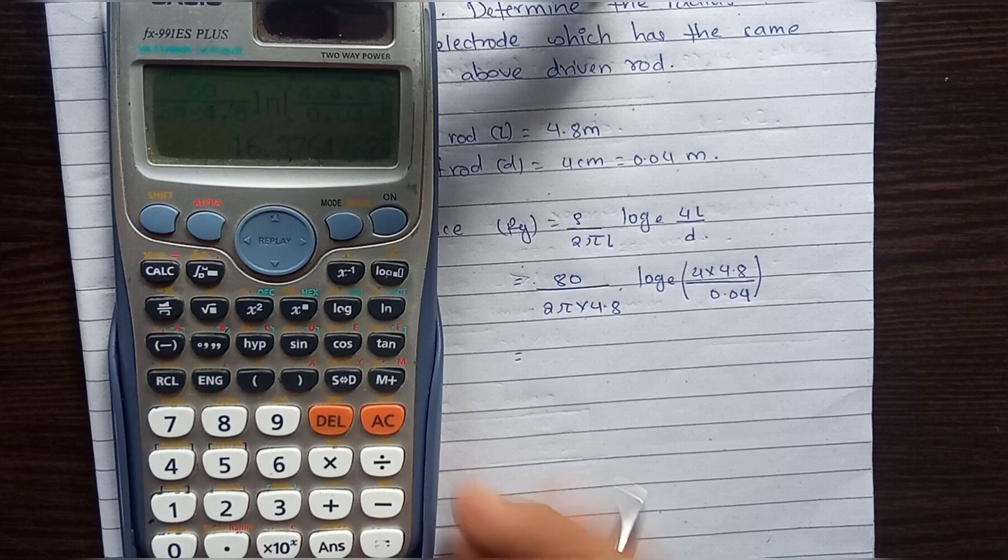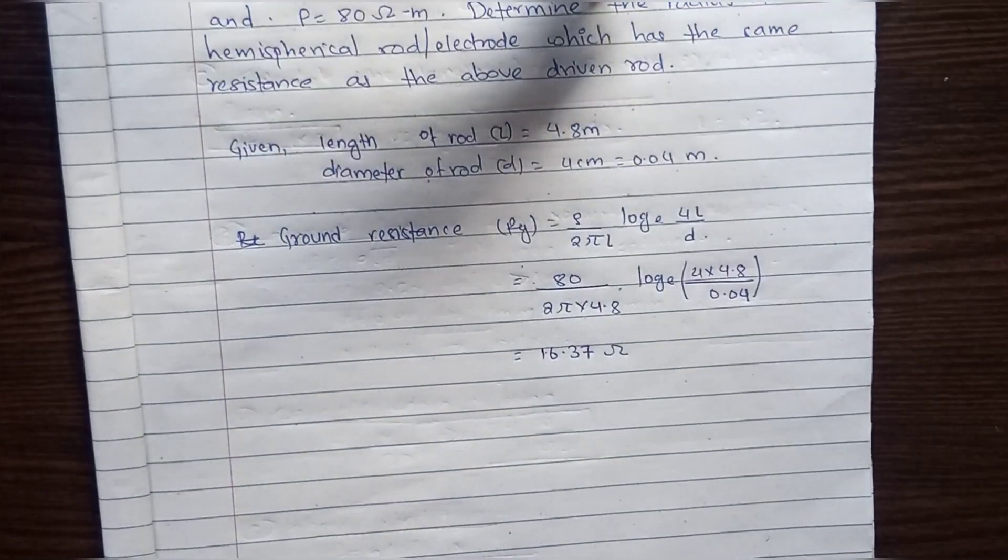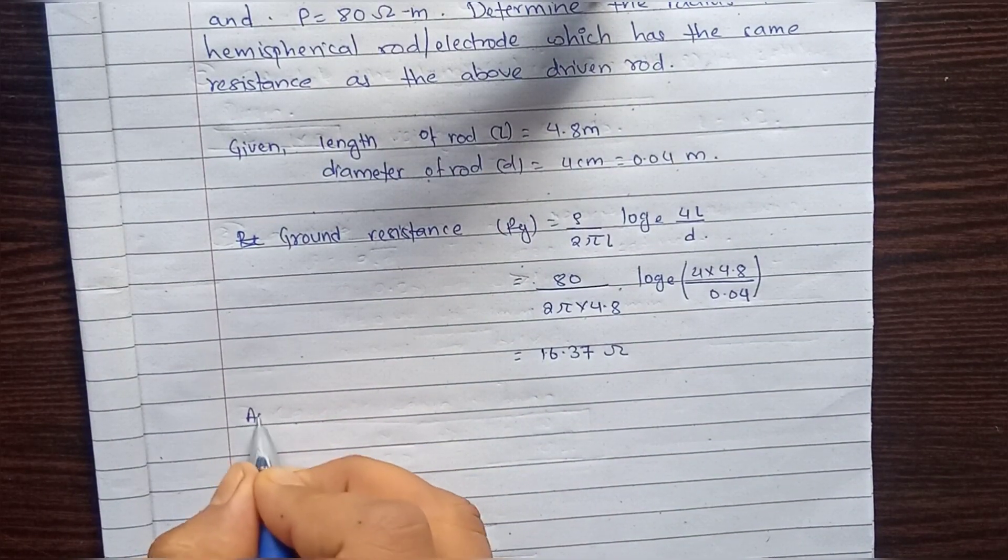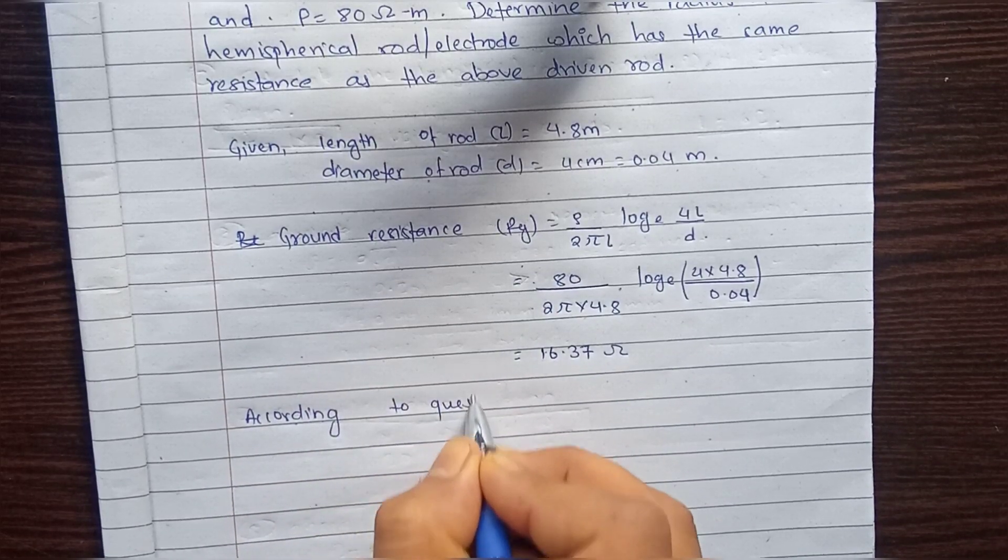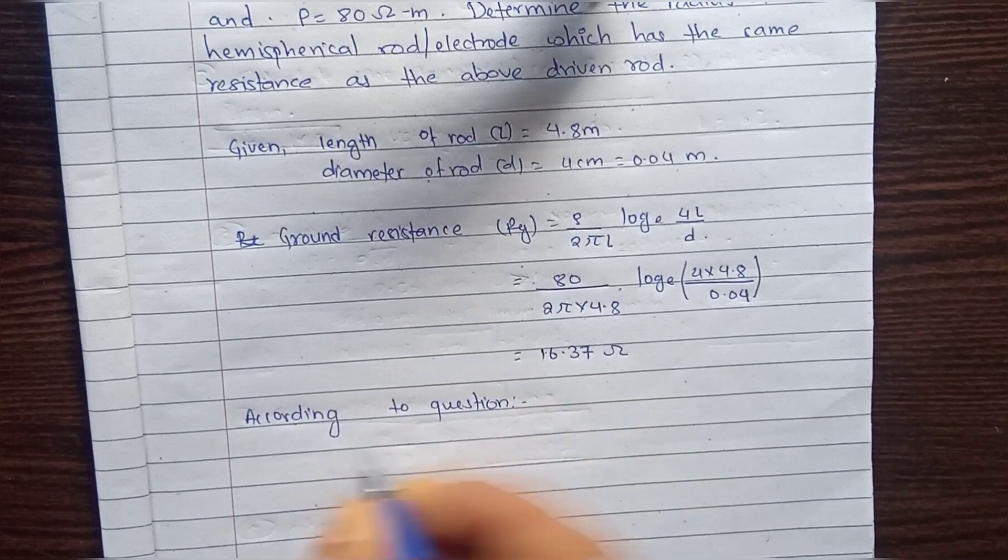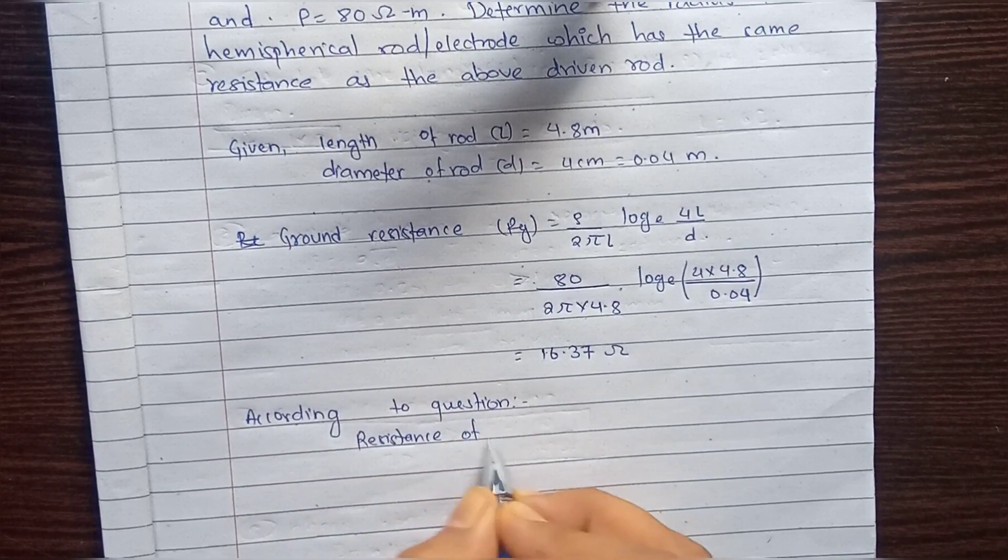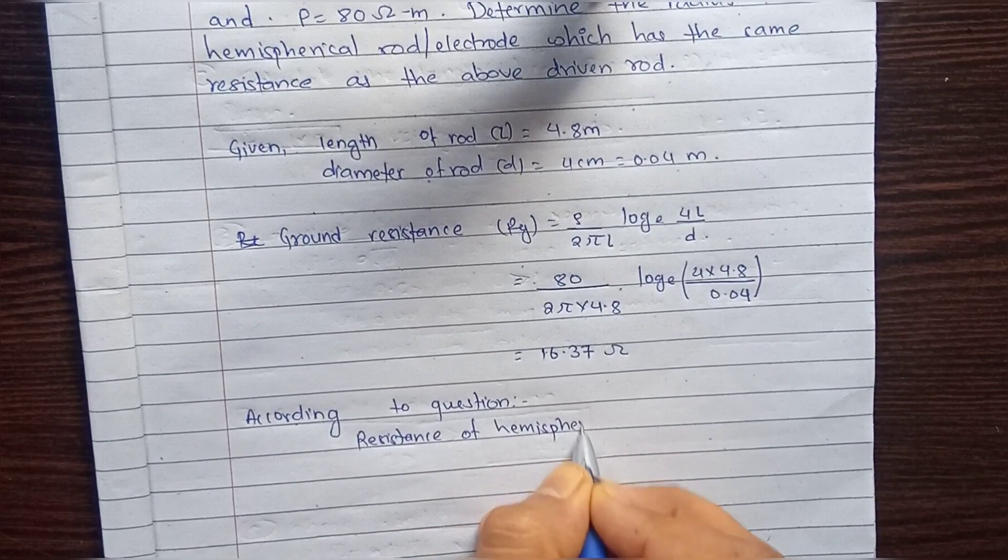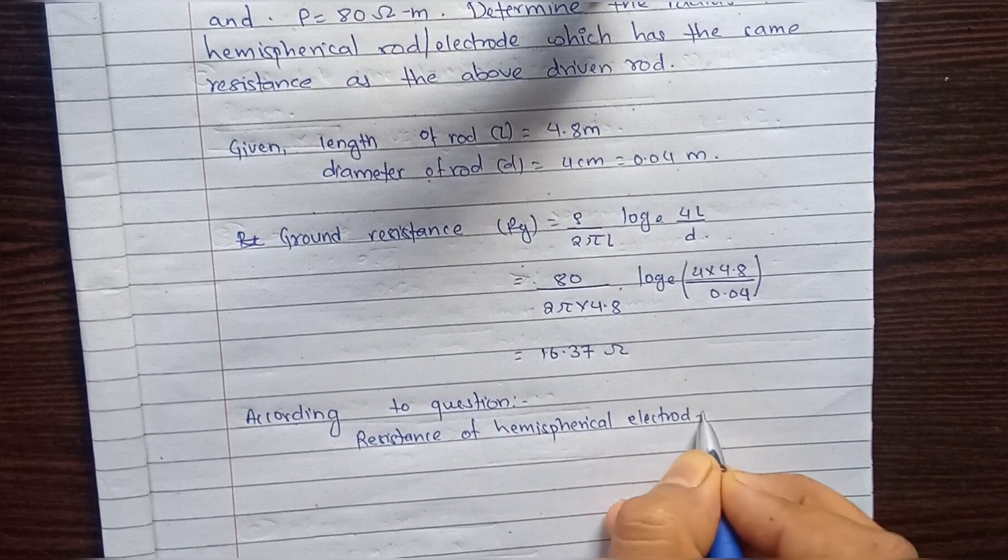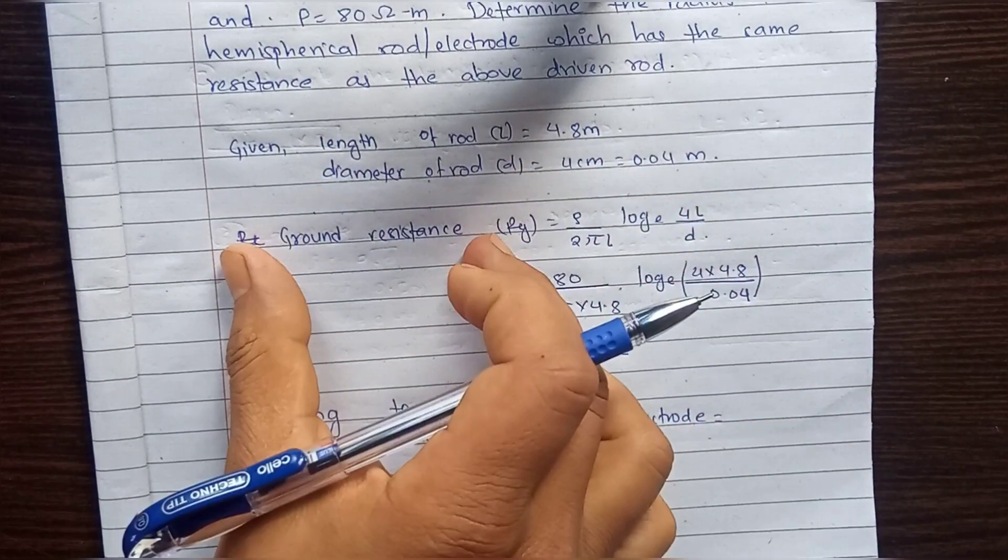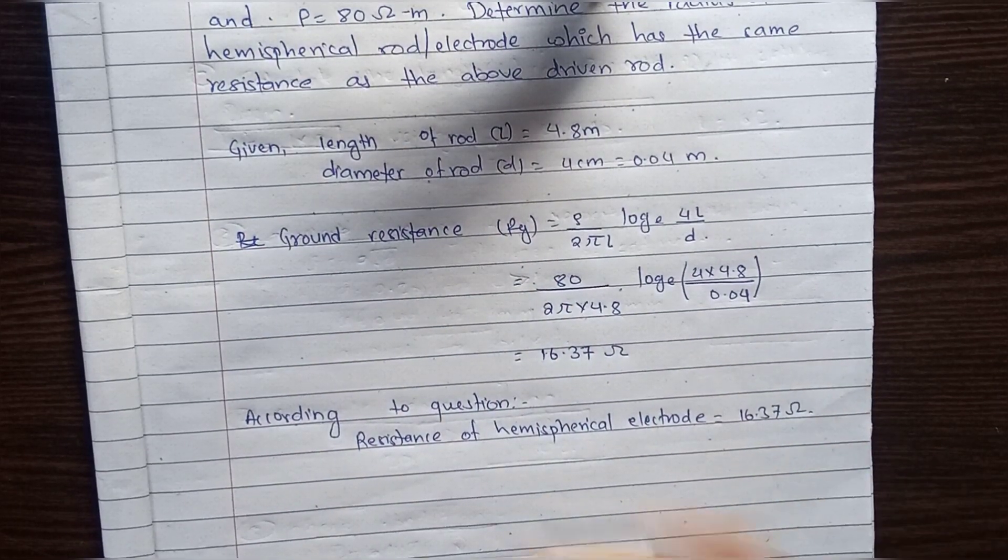That is 16.37 Ohm ground resistance. According to the question, the resistance of the hemispherical electrode is the same as the rod, which is 16.37 Ohm.